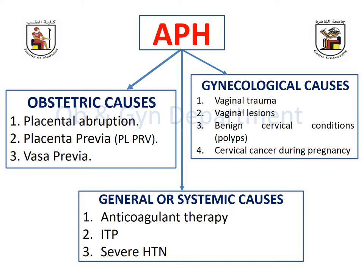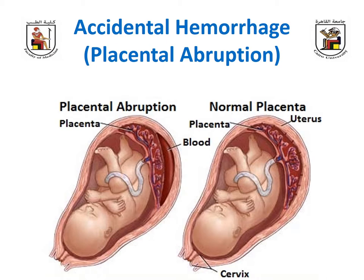For the obstetric causes, there are two main entities to differentiate: placenta previa and placental abruption. Today our topic is placental abruption, also called accidental hemorrhage. Placental abruption describes the separation of a normally implanted placenta — meaning the placenta is implanted on the upper uterine segment but has separated for some reason, leading to abnormal bleeding. This is different from placenta previa, where the placenta is abnormally implanted in the lower uterine segment.